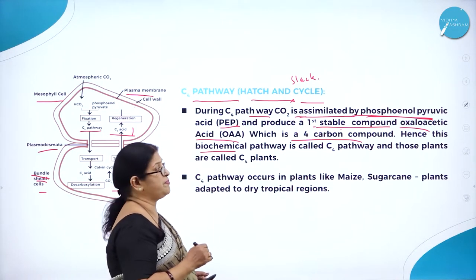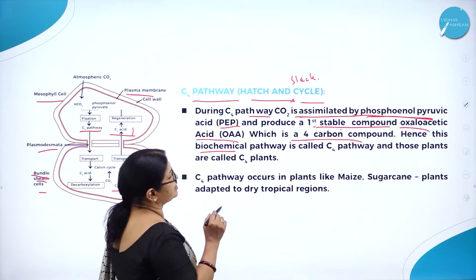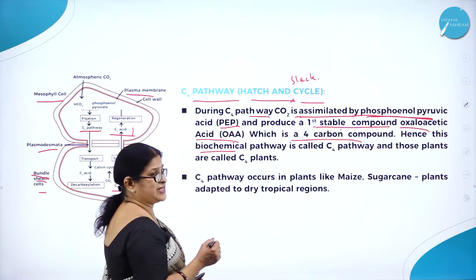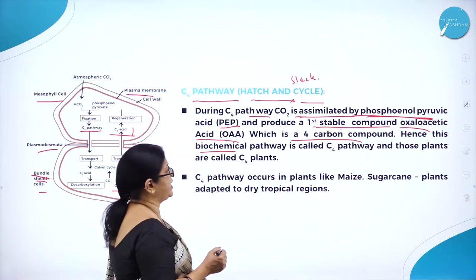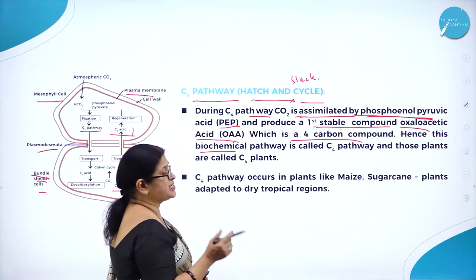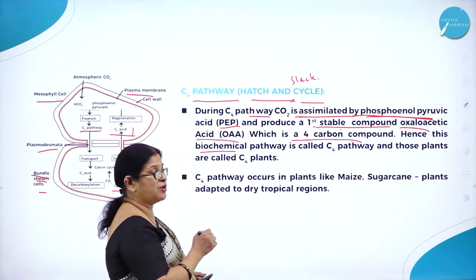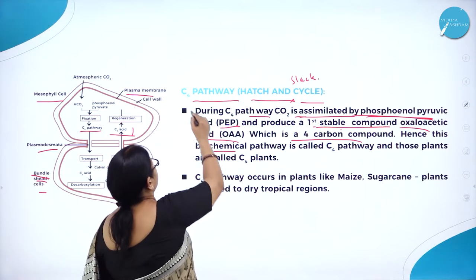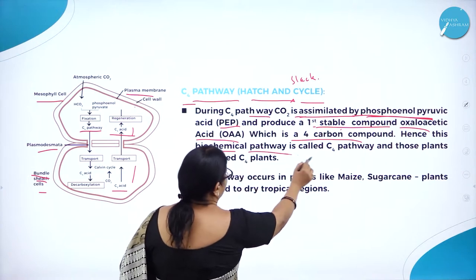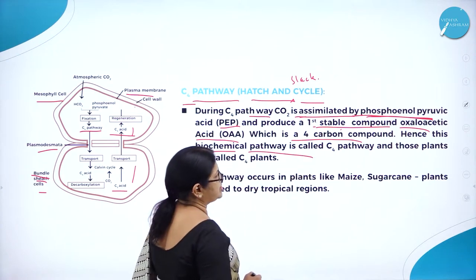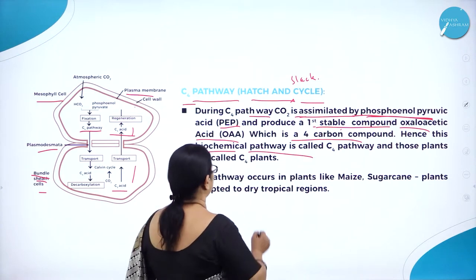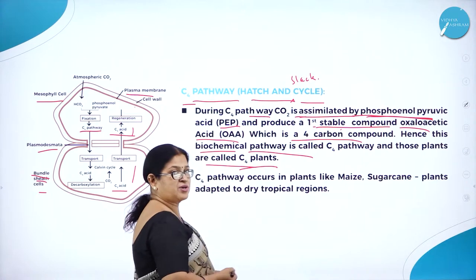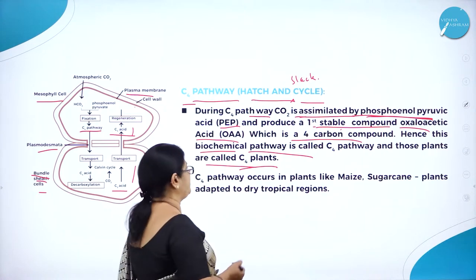The first stable compound formed is oxaloacetic acid, that is OAA, which is a four carbon compound. Because it is a four carbon compound, it is called C4 pathway. And hence the biochemical pathway is called C4 pathway and those plants are called as C4 plants. The C3 pathway plants are called C3 plants.